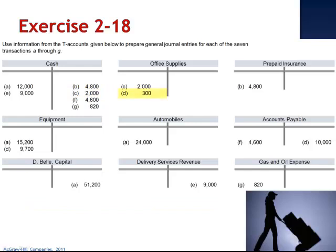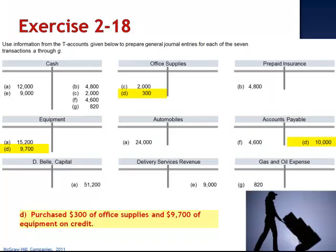Letter D includes a debit to office supplies for $300, a debit to equipment for $9,700, and a credit to accounts payable for $10,000. We have two assets increasing and a liability increasing. The company purchased $300 of office supplies and $9,700 of equipment on credit.